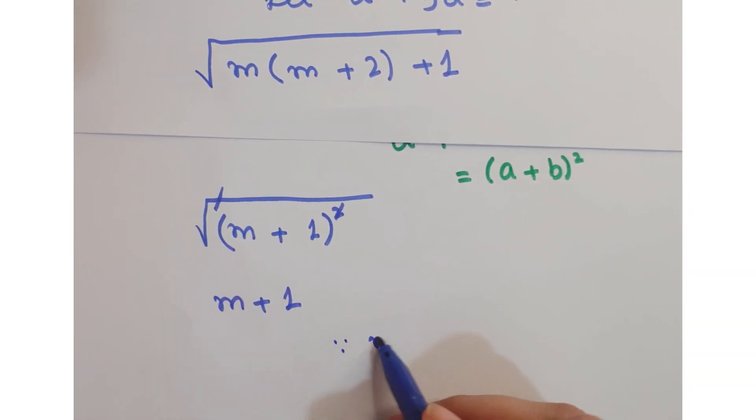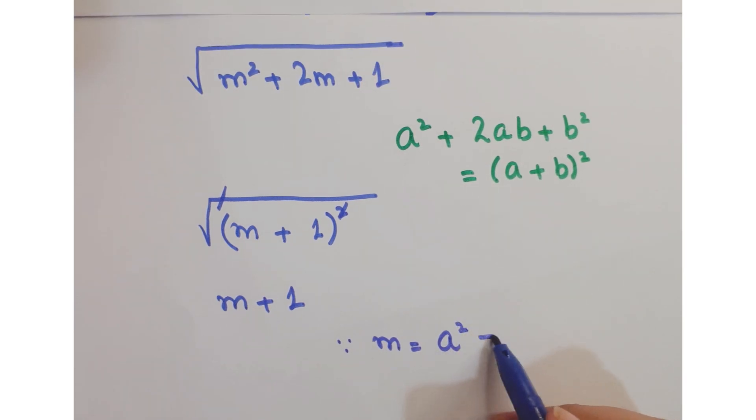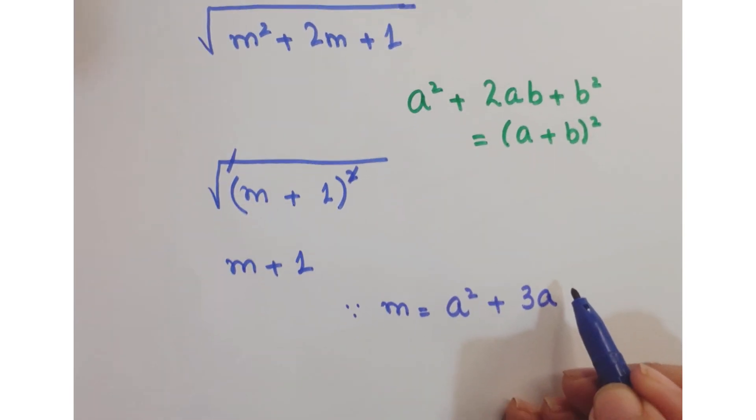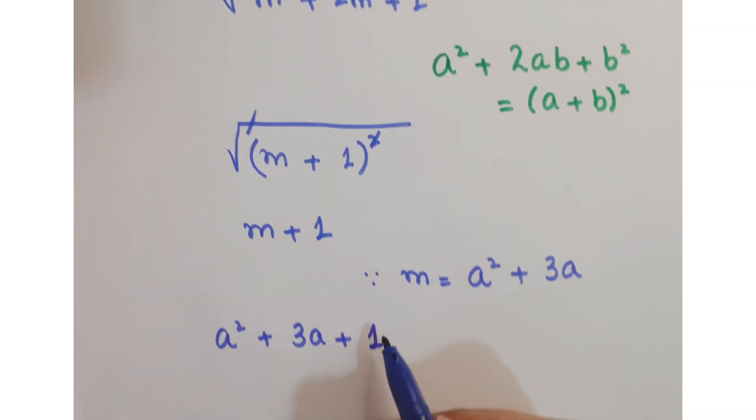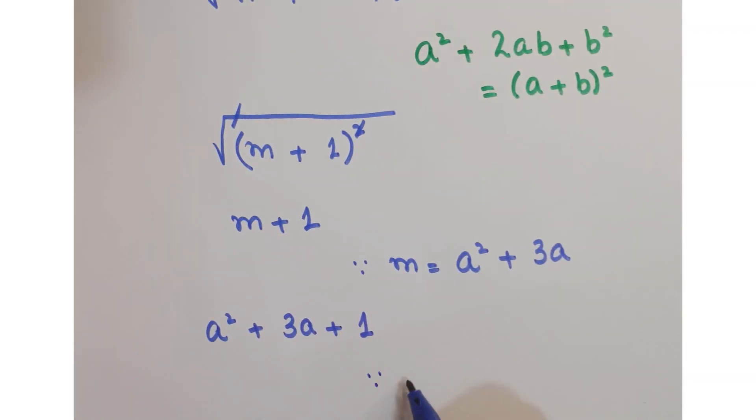Now, since m equals a squared plus 3a, we can write here a squared plus 3a plus 1. Now we assumed that a equals 50, so replacing a with 50.